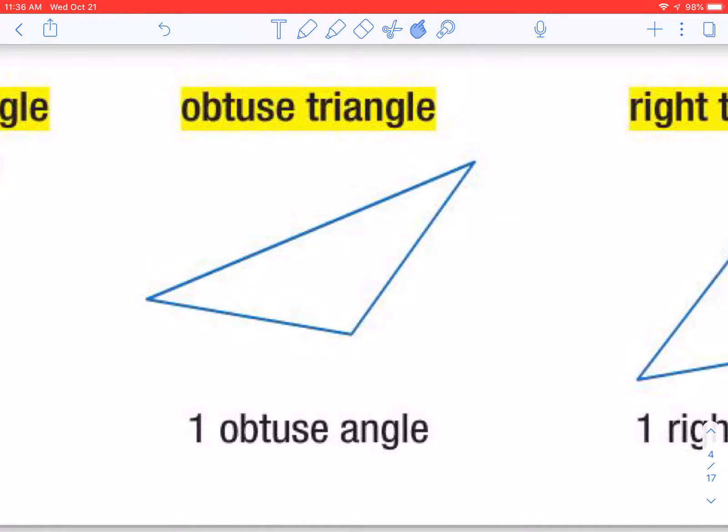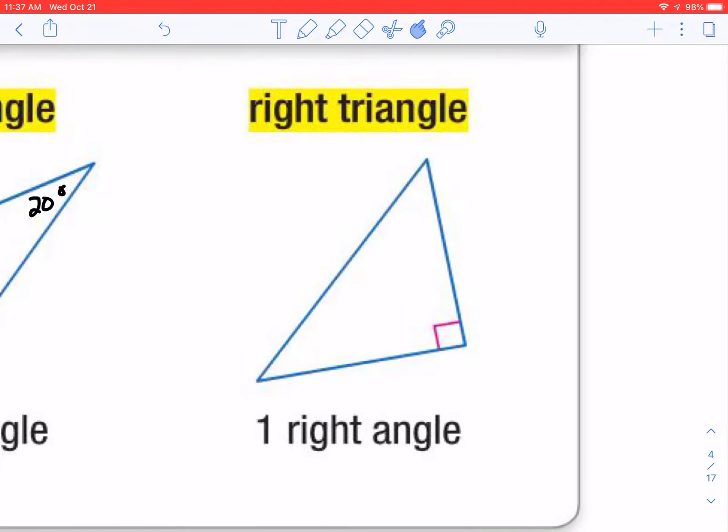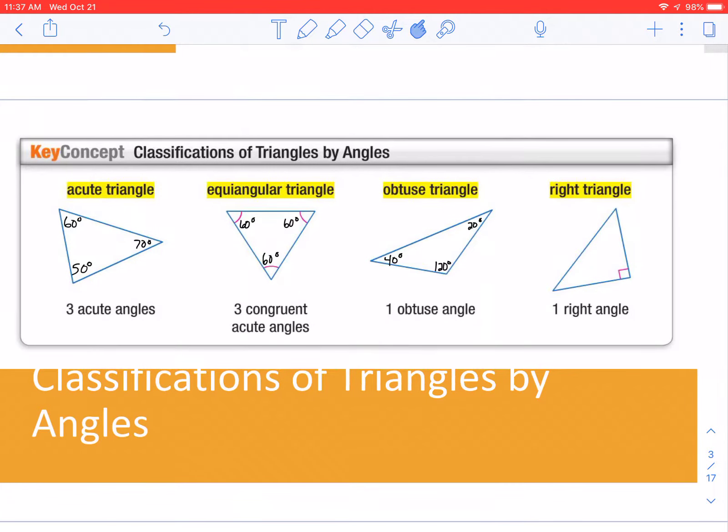Then we have an obtuse triangle. And that has one obtuse angle. For example, if this angle here was 120, then we would have maybe this one be 20 degrees, and this one be 40 degrees. So if that's an obtuse triangle, one obtuse angle. And a right triangle will have one right angle. So those are the four that we need to know. We need to classify them by their angles.